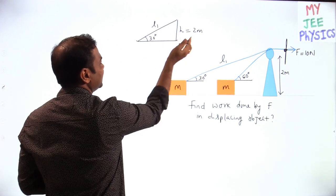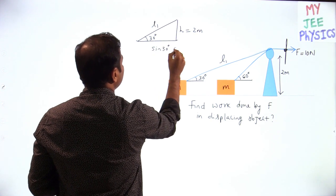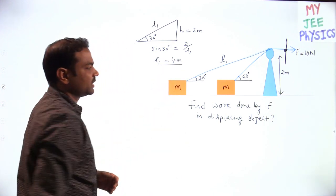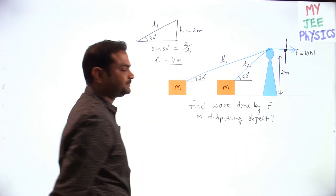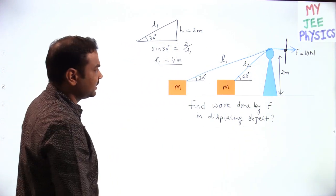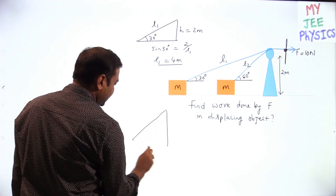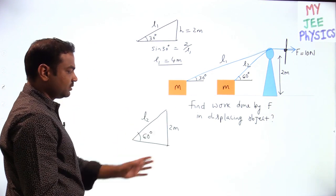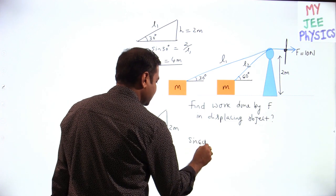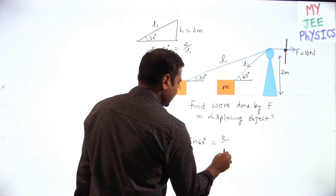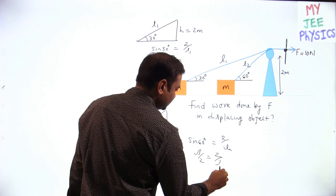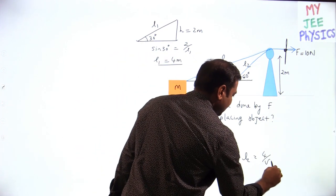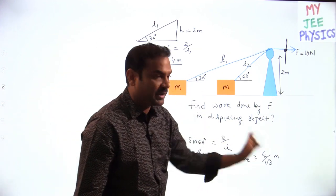Similarly, L2 is the final length. To find L2, we draw the triangle: height is 2 meters and the angle is 60 degrees. Then sin 60 = 2/L2, so √3/2 = 2/L2, giving L2 = 4/√3 meters. So initially the string length was 4 meters and now it is 4/√3 meters.